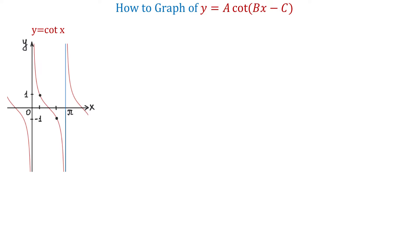To understand how to graph a variation of the cotangent function y equals a cotangent of bx minus c, first we will review the graph of the basic cotangent function. Here we have the rectangular coordinate system, and one of the asymptotes is at 0 and the other one is at pi. The function completes one period as x changes between 0 and pi.